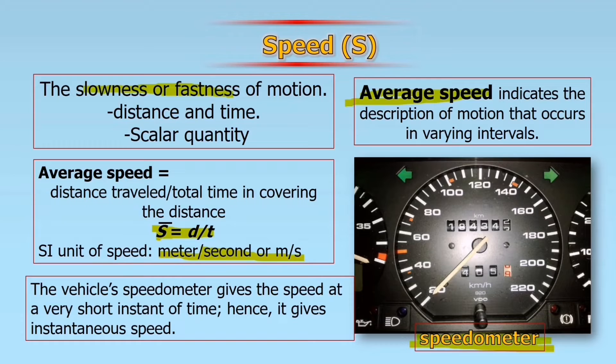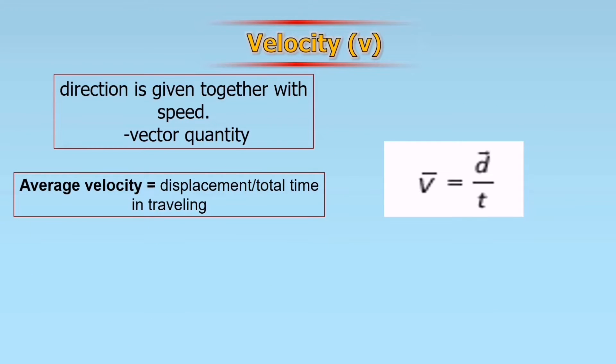It is velocity. When we say velocity, the direction is given together with speed. It is a vector quantity. So it indicates where you are heading and how slow or fast you are moving, plus the direction, that is velocity. In getting the velocity, we have the formula: displacement divided by total time. Average velocity equals displacement divided by time in traveling.